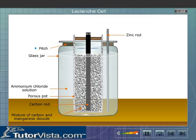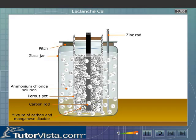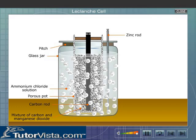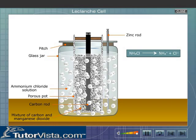Let us now look at the chemical reactions taking place inside the cell to understand how the electrodes get charged. Ammonium chloride, the electrolyte, splits into ammonium and chloride ions. The chloride ions move towards the zinc rod.